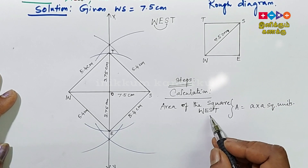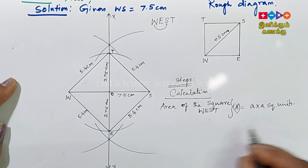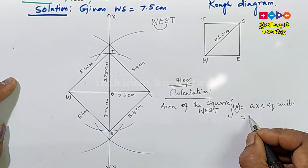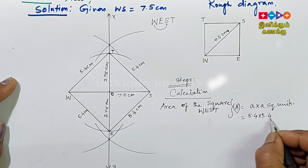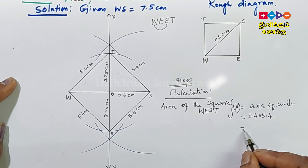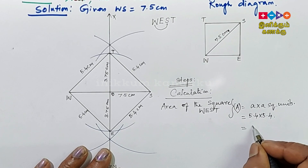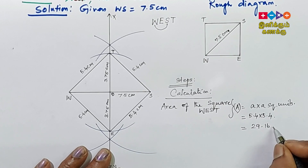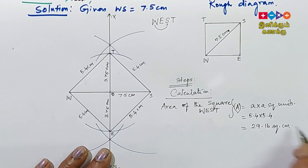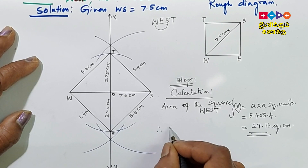Area of the square: A equals your side squared — square units. You have 5.4 into 5.4, multiplied — 29.16 square centimeters. The area of the square.